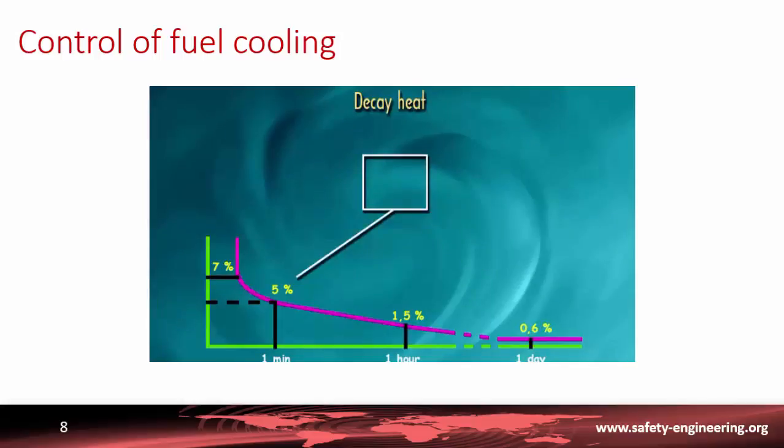It is to be noted that the level of 5% after one minute corresponds to around 140 megawatts in the case of Electra 1 and 200 megawatts in the case of Electra 2, and that after one hour it is still at 40 megawatts in the case of Electra 1 and 60 megawatts in the case of Electra 2.